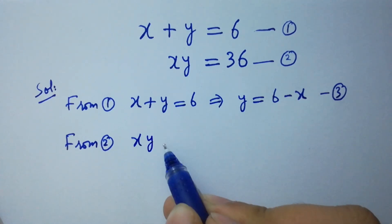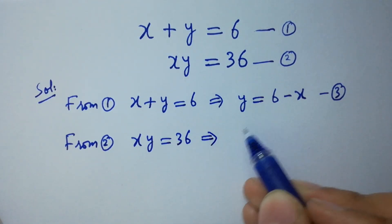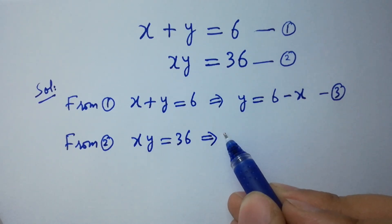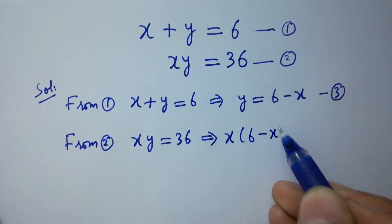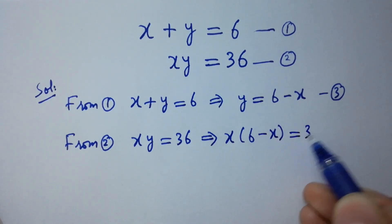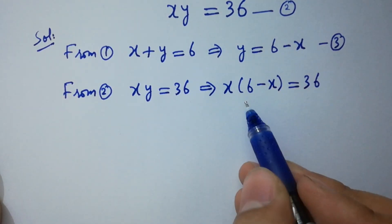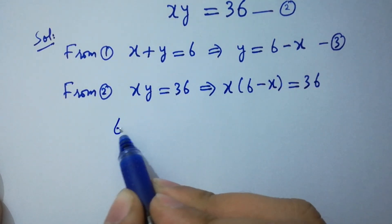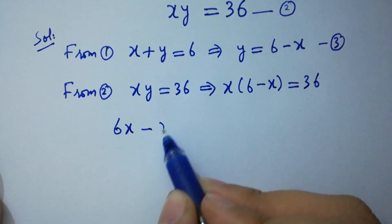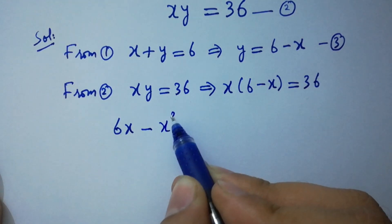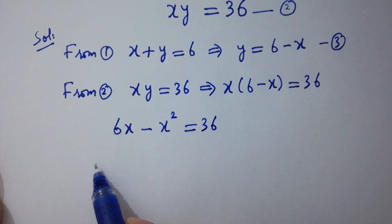From the second equation, x times y equals 36. Put the value of y: x times (6 minus x) equals 36. Simplify: 6x minus x squared equals 36.